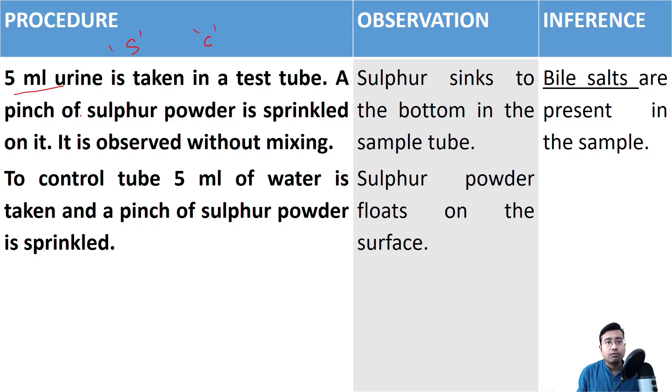And on top of that, we need to sprinkle a very small amount of sulphur powder, just like that with the first spatula. Similarly, in the control tube, we need to take same volume that is five milliliter of distilled water. And on top of that, we need to sprinkle very small pinch of sulphur powder. And that's it. This is the procedure.